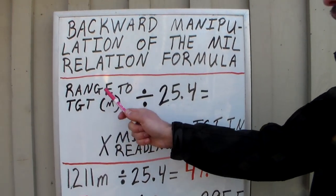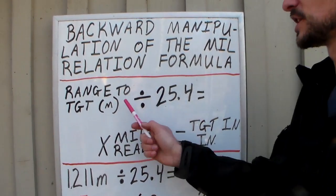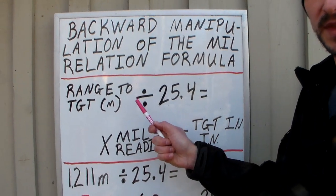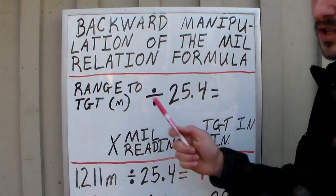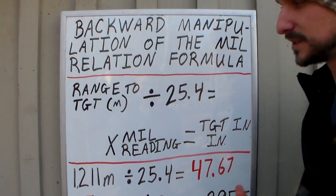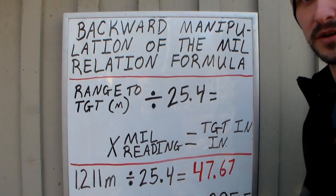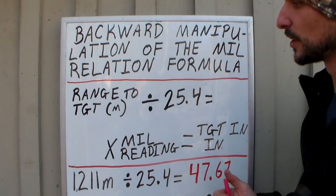Okay, let's cover the first part. Range to the target in meters. So how are we going to get that range to start with? We're going to get that range by possibly knowing a target already out there, a known width on a target or height on a target, and use our mill relation formula that we already went over.